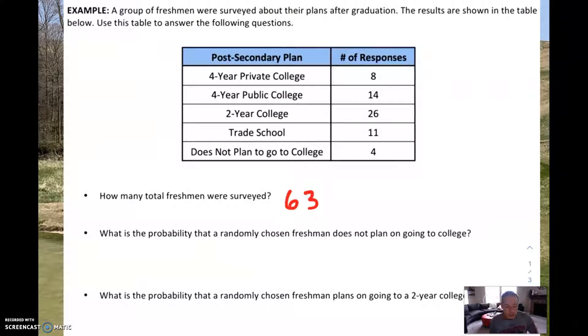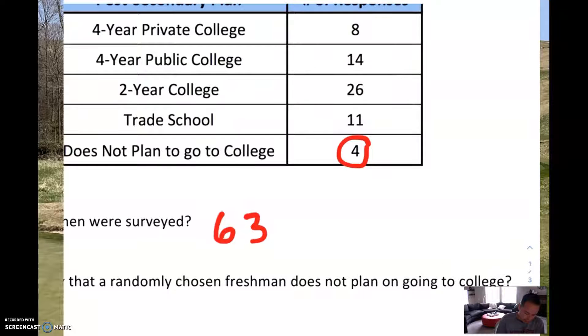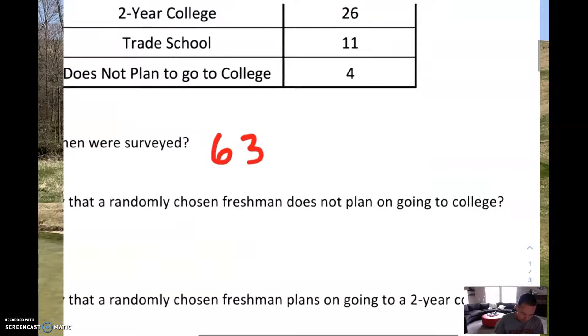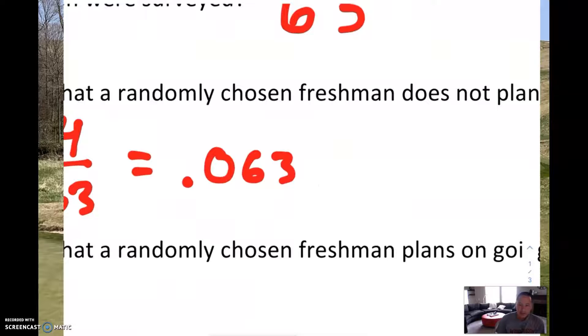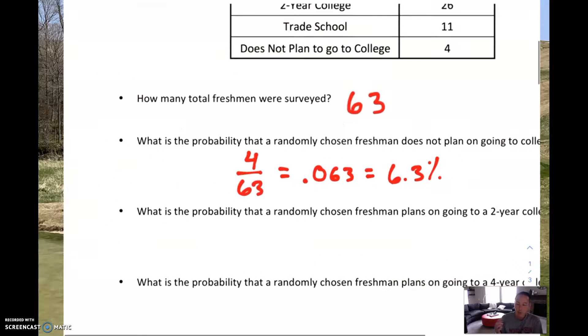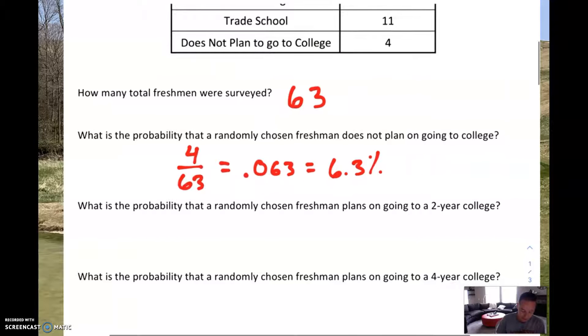The first question says, what is the probability that a randomly chosen freshman does not plan to go to college? If you look through this table, it's this cell right here. These are the students that do not plan on going to college. There were four of them. As a fraction, we would write this as 4 out of 63. That fraction bar, you can think of it as the phrase 'out of.' Then we want to turn it into a decimal and a percent. If we take 4 and divide it by 63, it would be 0.063. To turn this into a percent, we can just move that decimal over two spots and that would be 6.3%. According to the survey, 6.3% of the freshmen do not plan on going to college.